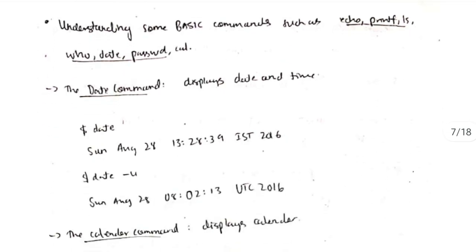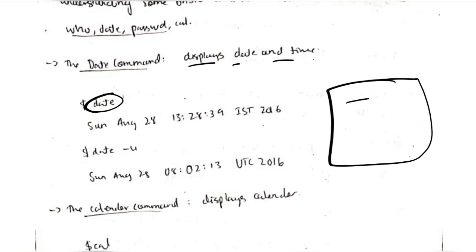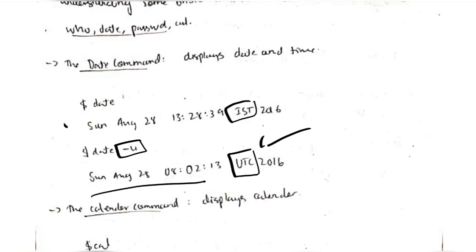Understanding some basic commands like echo, printf, who, date, and password — these are keywords which they usually ask in exams. The date command displays the date. In your terminal if you write the command 'date', it will output the current date. If we write 'date -u', it will output the current date and time in UTC — universal time. This is the Indian standard time and this is the universal time — in that way we can output accordingly how we want.